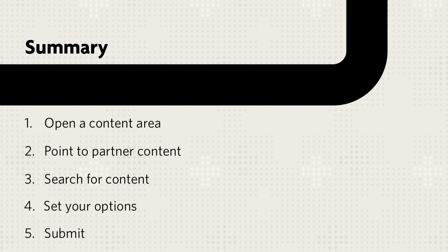Let's review. To add partner content or textbook information, first open a content area, point to partner content in the action bar, search for your content, set your options, and then Submit.